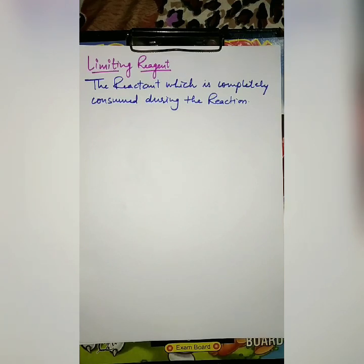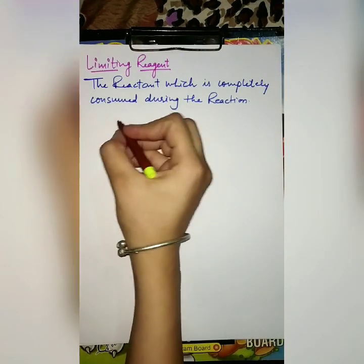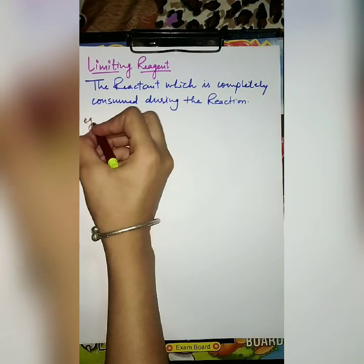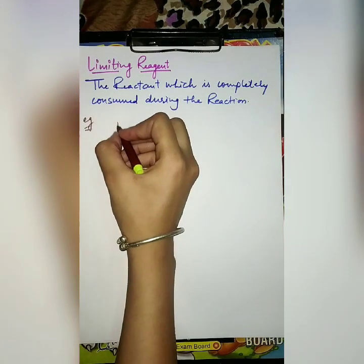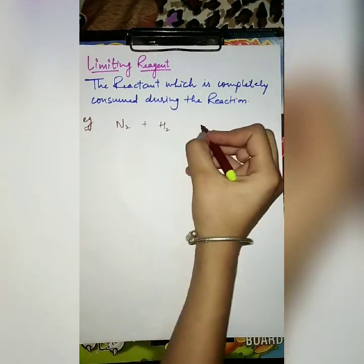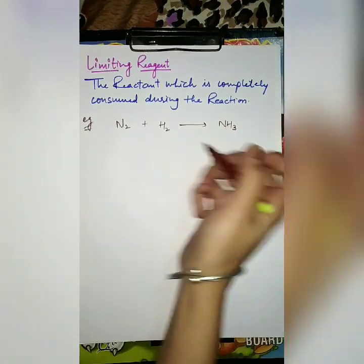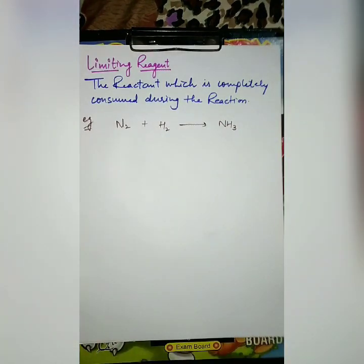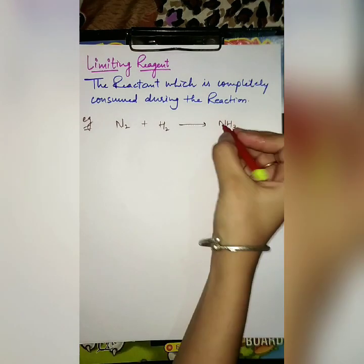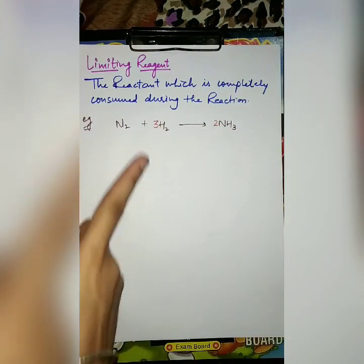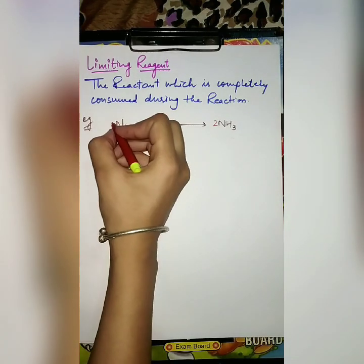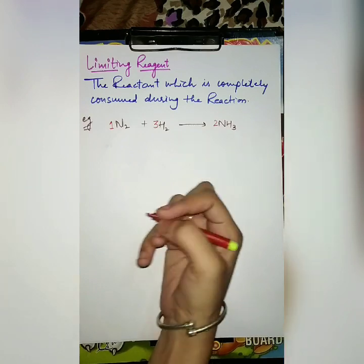What is the concept and importance of this? To understand it, let us discuss the example of preparation of ammonia. How will you prepare ammonia? You will prepare it by reacting nitrogen and hydrogen gas. So balance the reaction: one mole of nitrogen reacts with three moles of hydrogen to give two moles of ammonia.